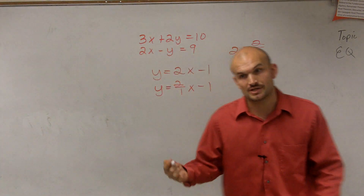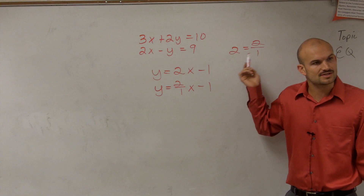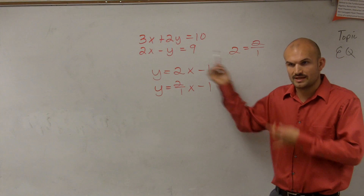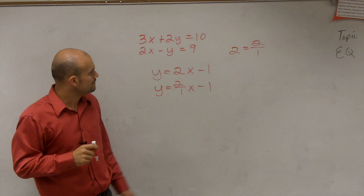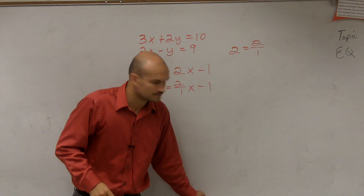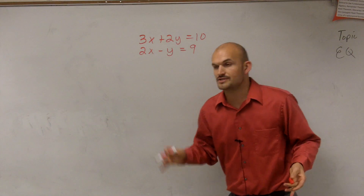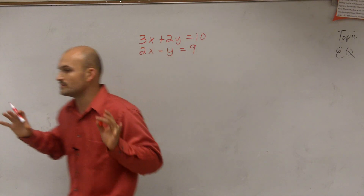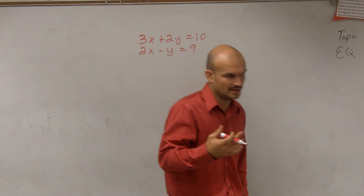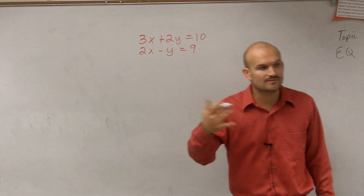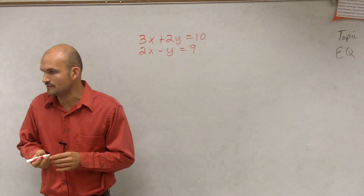Hopefully you understand: when you have an equation, one side is equal to the other side, so you can represent either side equally for each other. Now the first step when solving by substitution is to choose a variable to solve for that has a coefficient of 1 or negative 1. I'll explain why we want to choose that variable.